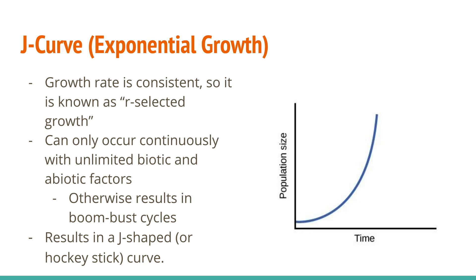This is one of ecologists' biggest concerns. Part of saving the environment is saving our own species, and right now human population is growing exponentially. We know it can't last — there are not unlimited resources on the planet. The big question is: will we level out and return to logistic growth with a carrying capacity, or will we hit what every other exponentially growing species does, which is a boom-bust cycle, often quite dramatically? We'll talk about boom-busts later on.